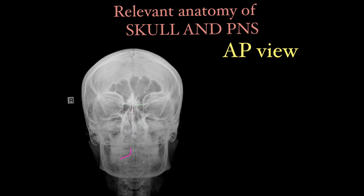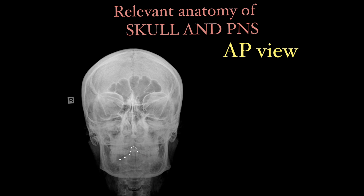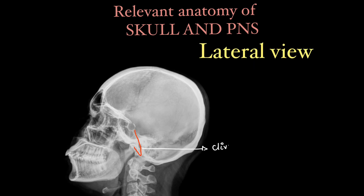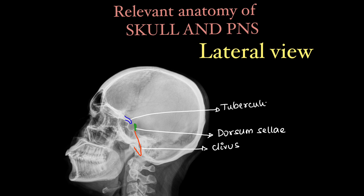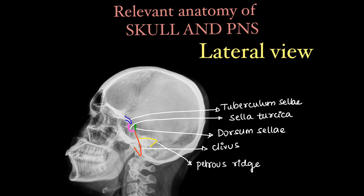Faintly visualized in the AP view is the C2 vertebral body or the axis bone and its process — the dens. Here you can see the dens and axis. Coming to additional structures on lateral view, we can see the clivus, the dorsum sellae, the tuberculum sellae, and the fossa which contains the pituitary — that is the sella turcica. We can see the petrous ridge.